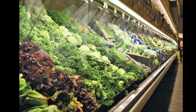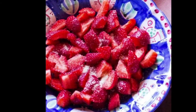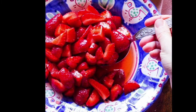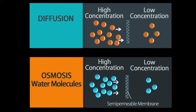Have you ever wondered why grocery stores continuously spray their produce? Why adding sugar to fresh strawberries and leaving them for a few minutes results in a delicious syrup? Or, and this is cruel, but you can kill slugs by pouring salt on them. All of these can be explained by an understanding of diffusion and osmosis.